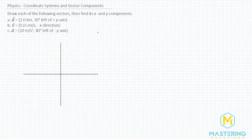Welcome to Mastering Solutions. In this coordinate systems and vector components problem, they give us vectors d, v, and a, and they want us to draw these and then find the x and y components. This is the same as the last problem we did, just with different vectors.